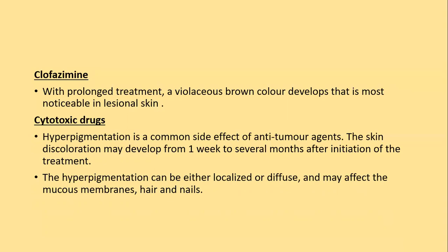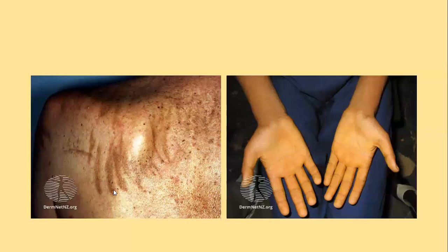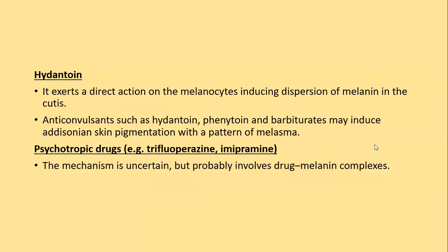Many cytotoxic drugs result in hyperpigmentation. The skin discoloration may develop from one week to several months after initiation of cytotoxic therapy and can be localized or diffuse, also affecting mucous membranes, hairs, and nails. Bleomycin-induced hyperpigmentation is characterized by a streaky appearance, like we see in flagellated dermatosis. Diffuse hyperpigmentation is also seen with other anti-cancer therapies.